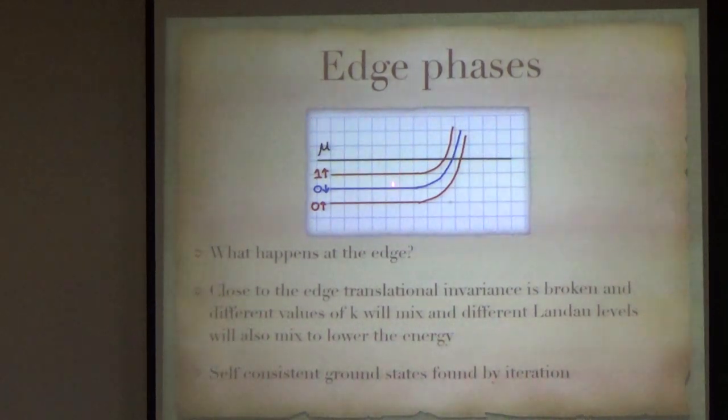But, now, we want to understand what happens at the edge. And, close to the edge, translational invariance in the y direction, of course, is broken. And, different Landau levels will also mix to lower their energy. And, one has to find out self consistent ground states by iteration.